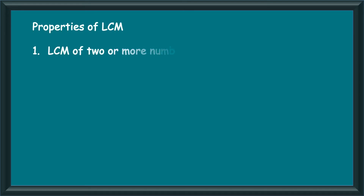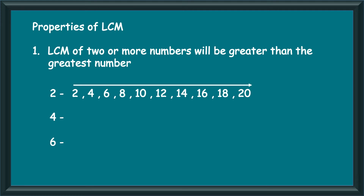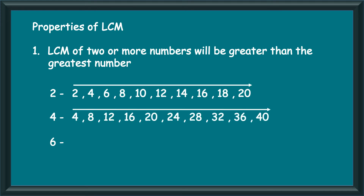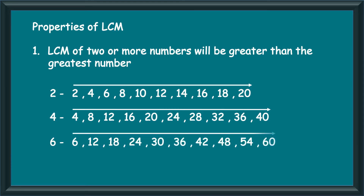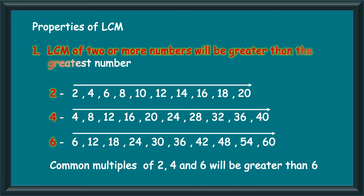The LCM of two or more numbers will be greater than the greatest number. For example, consider the numbers 2, 4 and 6. All the multiples of 2 will be 2 and greater than 2. The multiples of 4 will be 4 and greater than 4. And the multiples of 6 will be 6 and greater than 6. This means that any multiple common to the three numbers will be greater than all three numbers 2, 4 and 6. And if a multiple is greater than 6, it will definitely be greater than 2 and 4. Which means all the common multiples of 2, 4 and 6 will be greater than the greatest number 6. Hence, the LCM of two or more numbers will be greater than the greatest number.